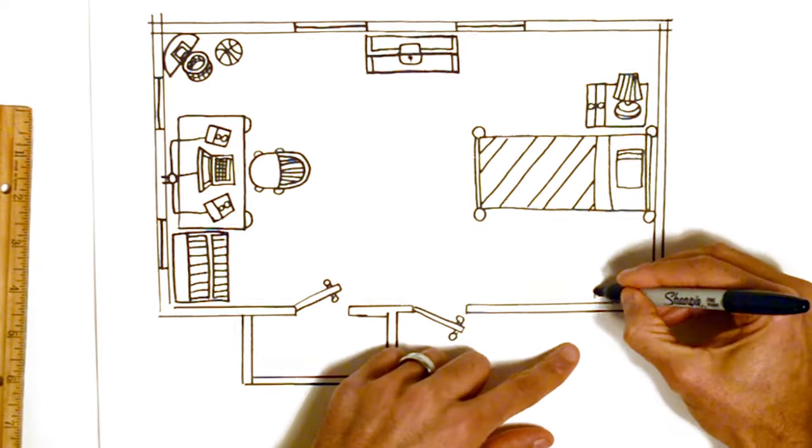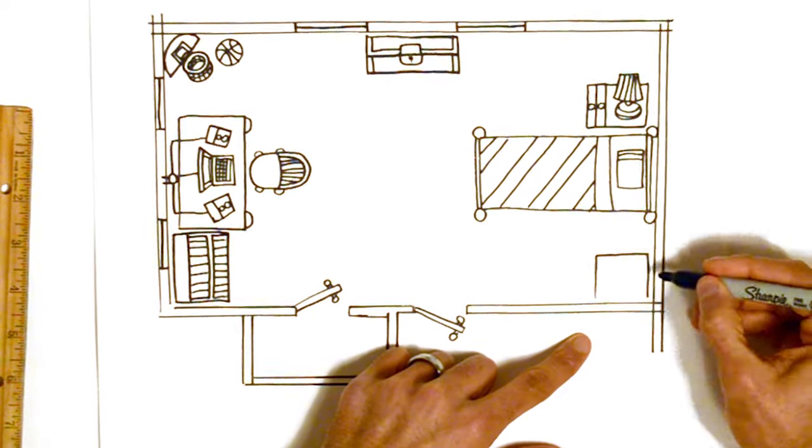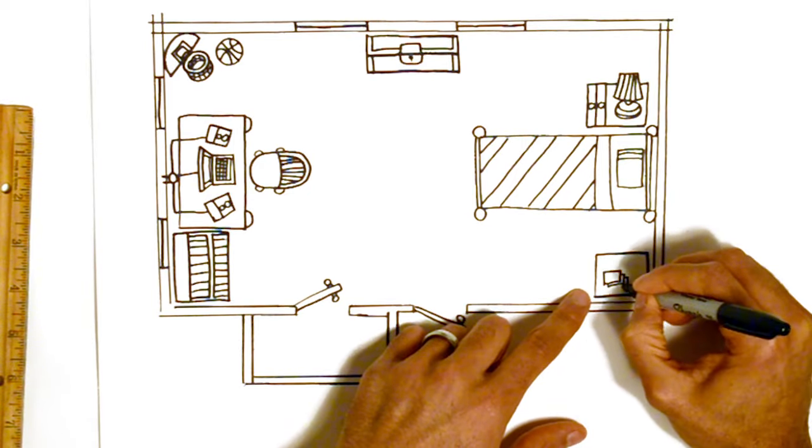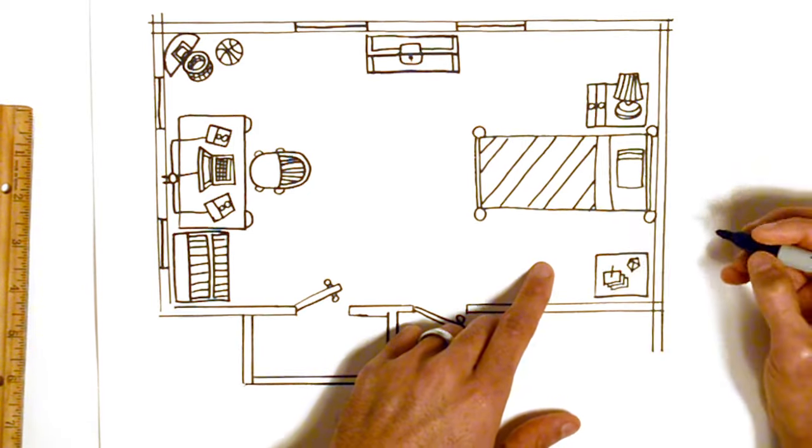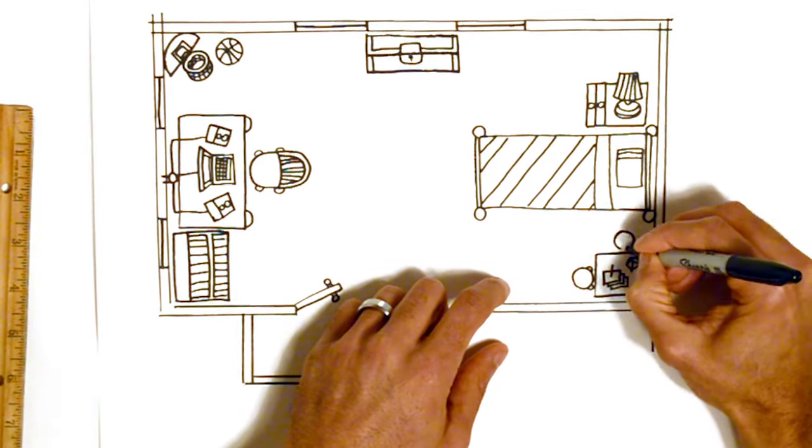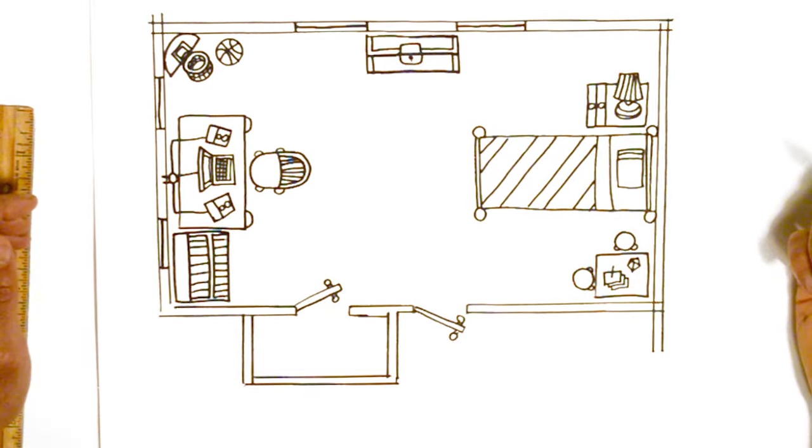Now let's see, in this corner we'll draw an art table. Yeah, this is where we can draw, color, and do neat art crafts like painting and origami. Two chairs, one for me and one for a friend. Well, this is a pretty cool room. What else should we add?